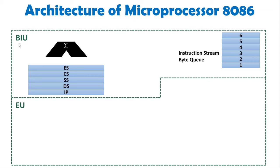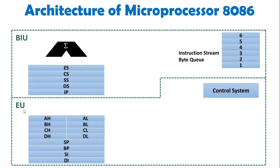When we talk about the components of the Execution Unit, the major component is the Control System, which provides control signals — such as read and write — to all elements in the architecture. The EU also has four general purpose registers: AX, BX, CX, and DX. Each register is split into high and low 8-bit halves: AH/AL, BH/BL, CH/CL, and DH/DL, so they can be used as 8-bit registers as well.